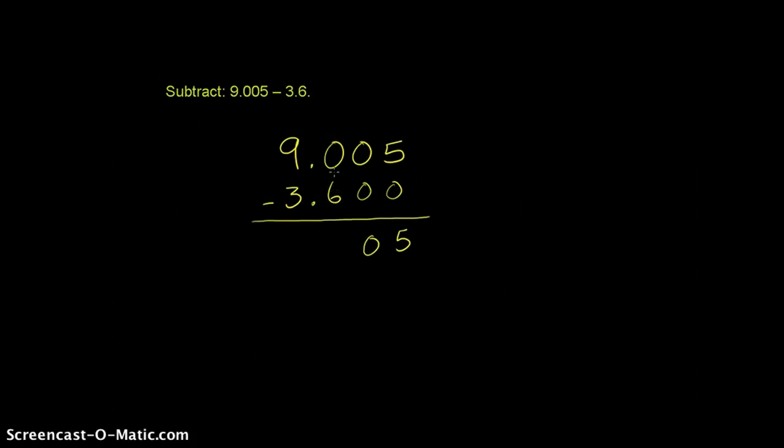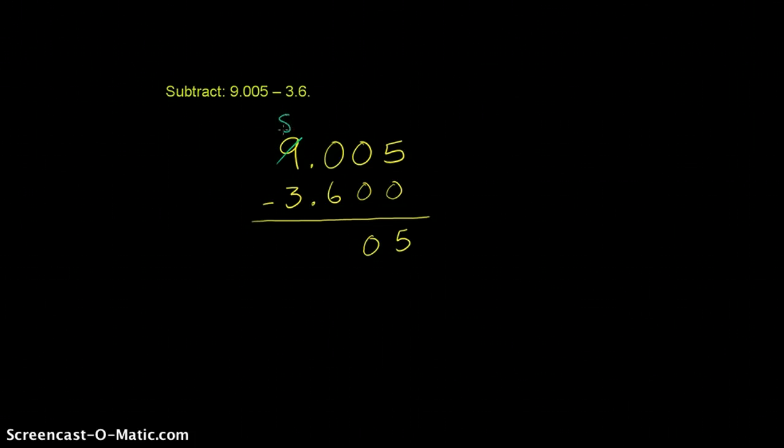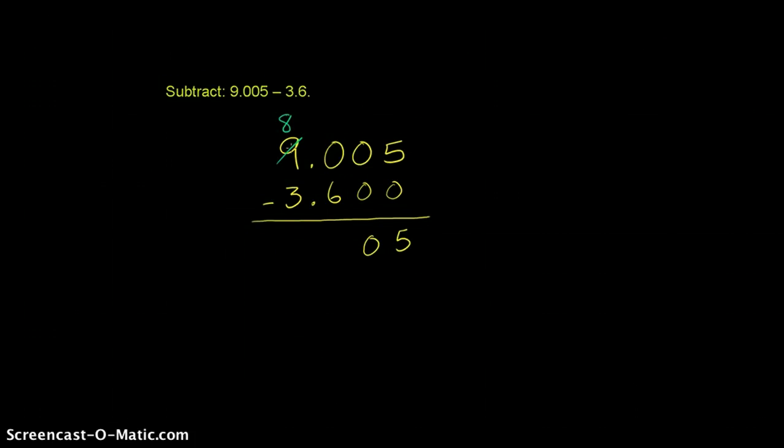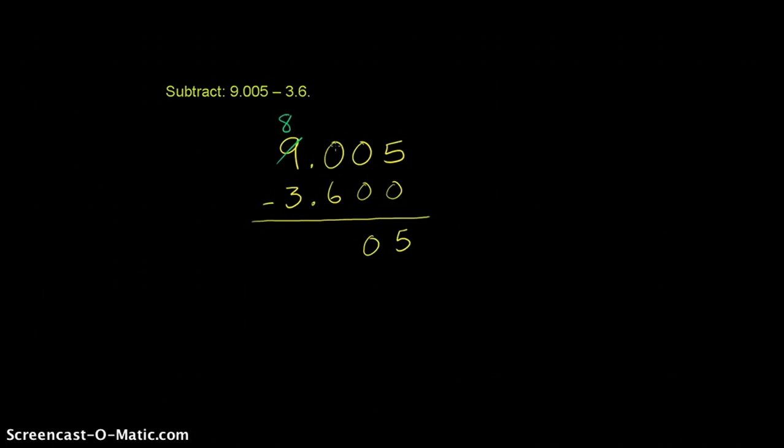And you can't subtract 6 from 0, so we need to get something into this space right here. And what we essentially are going to do is regroup. We're going to take 1 from the 9. So let's take 1 from the 9, so it becomes an 8.